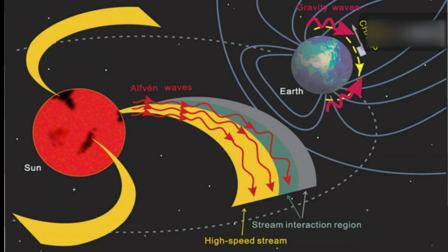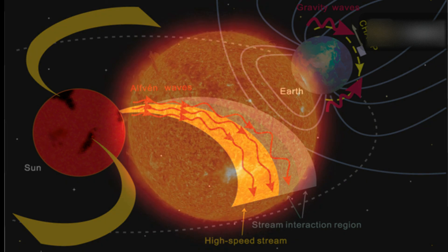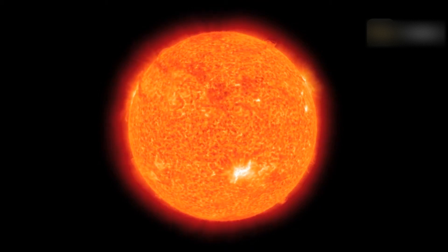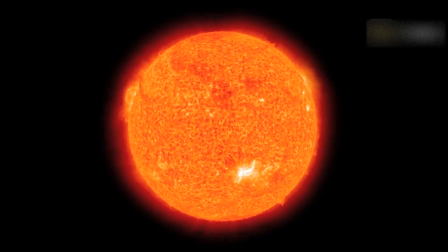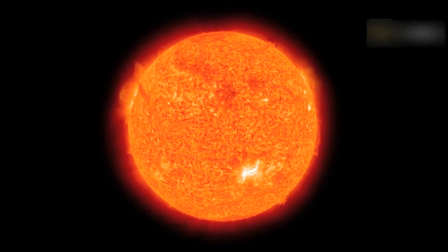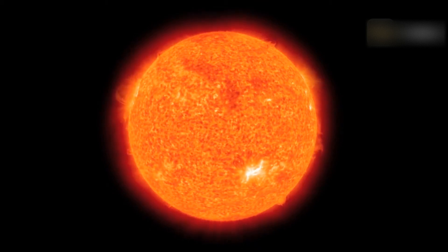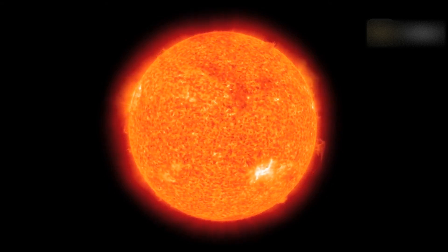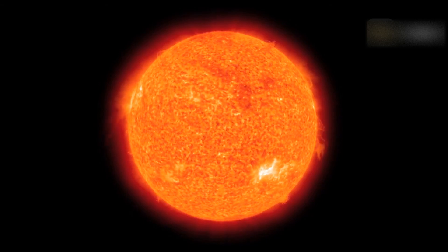CIRs develop when high-speed solar wind, typically originating from coronal holes, catches up to slower wind streams. The resulting compression creates distinct boundaries: a forward pressure wave at the leading edge and a reverse pressure wave at the trailing edge. At greater distances from the sun, these pressure waves can develop into shock waves.